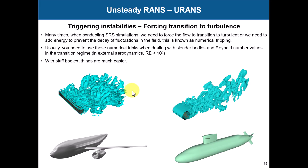Also, many times when running a scale-resolving simulation — even URANS — you will notice that this behavior is going to decay in time because the energy is dissipated and diffused. So you need to somehow add a forcing term just to keep that energy in the system. There are many ways to do that: one is in the boundary condition where you add that fluctuation, or you add sources in the domain — there are many ways to do it.